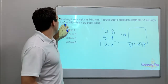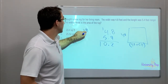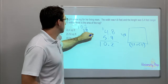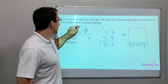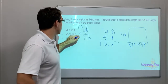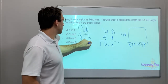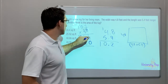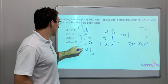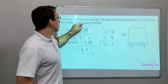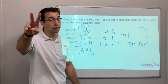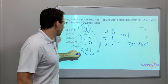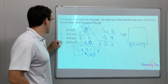Now 4.8 times 10.2: eight times two is 16; eight times zero is 0 plus one is 1; eight times one is 8. Tens place: four times two is 8; four times zero is 0; four times one is 4. We have two decimal places in the problem, so we're going to have two decimal places in our answer. Our answer is 48.96 square feet.